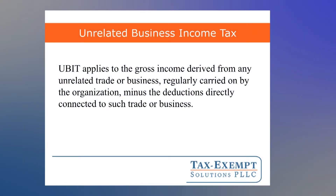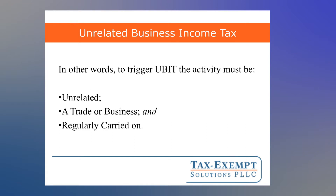So what does UBIT apply to? This slide states the basic rule, paraphrased from Section 512 of the Internal Revenue Code. UBIT applies to the gross income derived from any unrelated trade or business regularly carried on by the organization, minus the deductions directly connected to such trade or business. When you break this down, it is a three-part test.